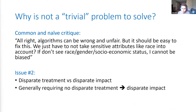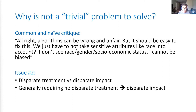Another issue is the difference between disparate treatment and disparate impact. Disparate treatment means using a one-size-fits-all rule — the same rule for everyone, not taking a sensitive attribute like race into account. Disparate impact means having a disproportionate impact on different groups. Generally, if you require there is no disparate treatment, you're probably going to face some disparate impact. Those two notions are generally going to be incompatible.